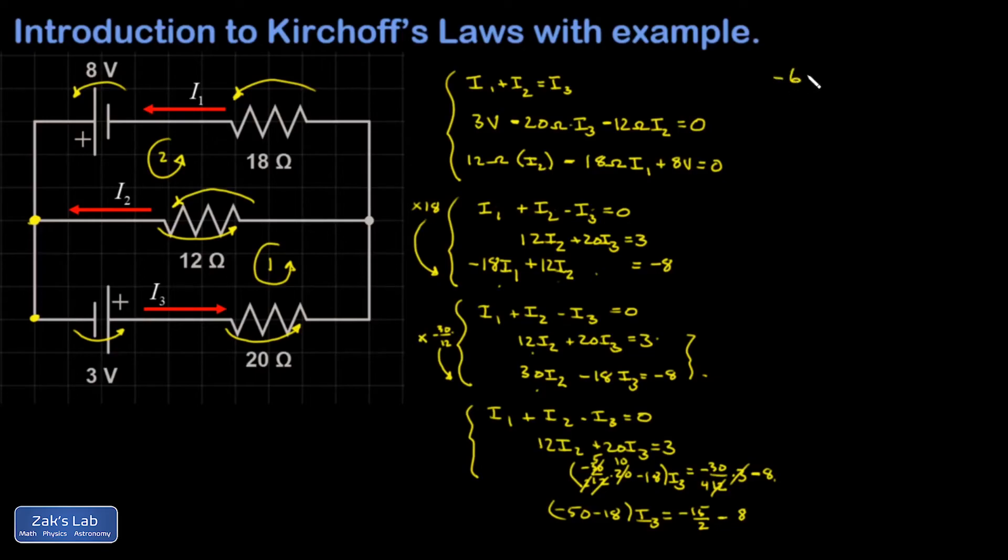Continuing to simplify, I have negative 68 i3. So i3 is negative 15 halves minus 16 halves. That's 8. So I get negative 31 halves. And when I solve for i3, I'm going to bail out of the exact fractions now and just write things as decimals to 3 sig figs. So I get 0.228 amps.